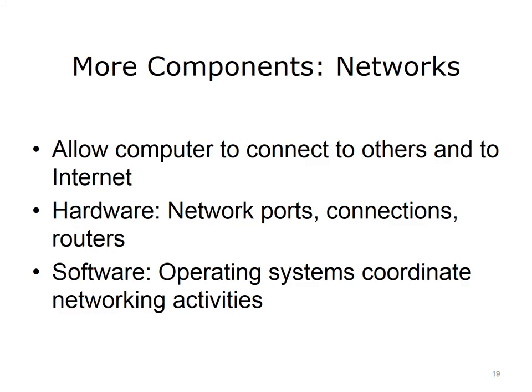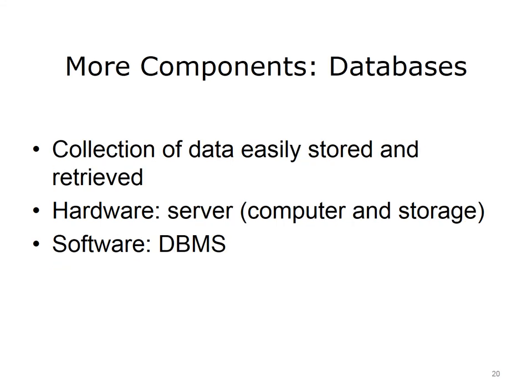There are some other structures that could be considered components of computing systems. Networks and databases are used on many computers and are a combination of both hardware and software. Networks connect to other computers and to the Internet. There are hardware ports on computers to facilitate this. Cables connect computers to routers and to other network connections. The operating systems of the computer and the network coordinate networking activities. Databases are often parts of large applications. Databases require a server, which is a computer with a large amount of storage, along with a database management system, or DBMS, which is the software that makes it work. Databases structure data in such a way that it is quickly and easily stored and retrieved, much faster than from a file or a spreadsheet.